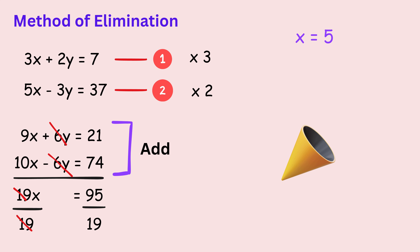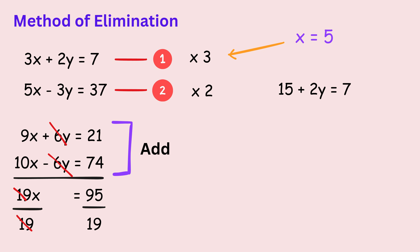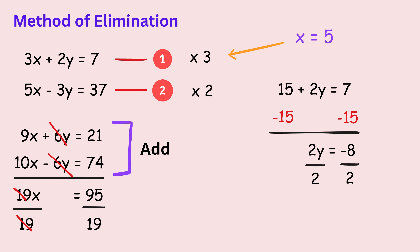Once we know the value of x, the problem is not finished yet. We still need to find the value of y. To do that, we substitute the value of x back into one of the original equations. We can use either equation, so we choose the first one. We replace x with 5. 3 times 5 gives 15. We subtract 15 from both sides, which leaves 2y equals minus 8. Finally, we divide both sides by 2, and we get y equals minus 4.